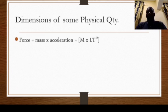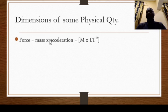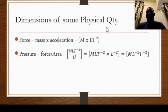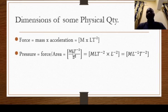For force, it can be expressed as mass times acceleration. Dimension for mass is [M] and dimension for acceleration is [LT⁻²], so the dimension of force is [MLT⁻²]. Note that when mass, length, and time appear together in a dimension, the conventional order is M followed by L followed by T.